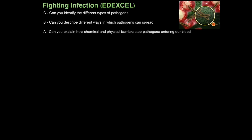In this tutorial, we're going to learn about infection and how we fight it. This is an Edexcel-specific tutorial. The first aim is: can you identify the different types of pathogens? Then, can you describe the different ways in which pathogens can spread? And finally, can you explain how chemical and physical barriers stop pathogens entering our blood?